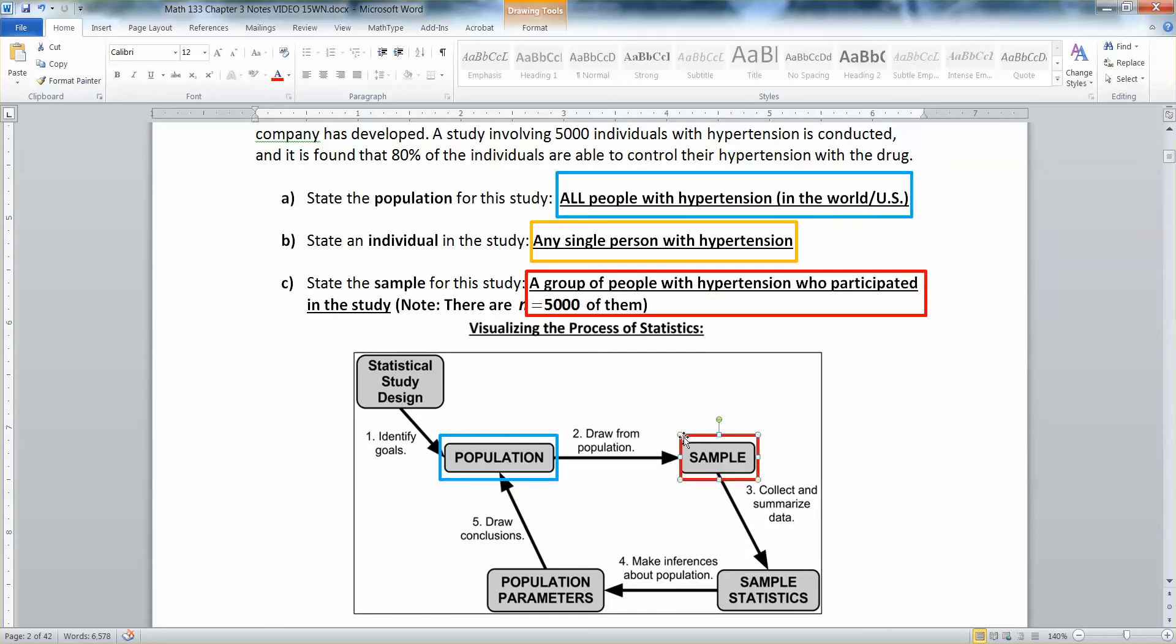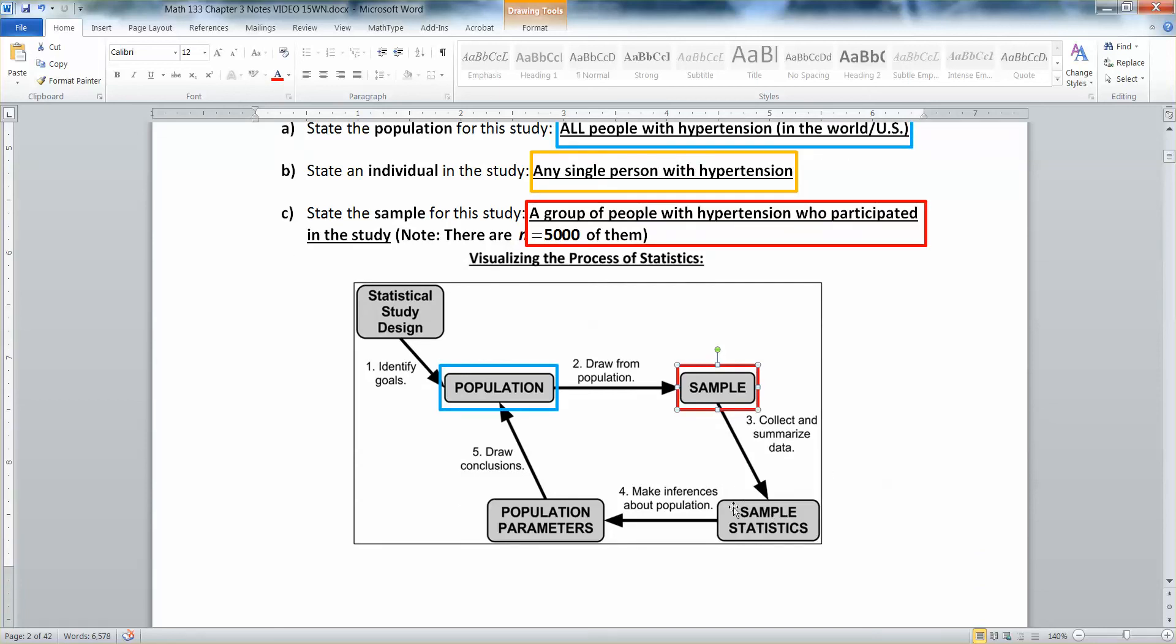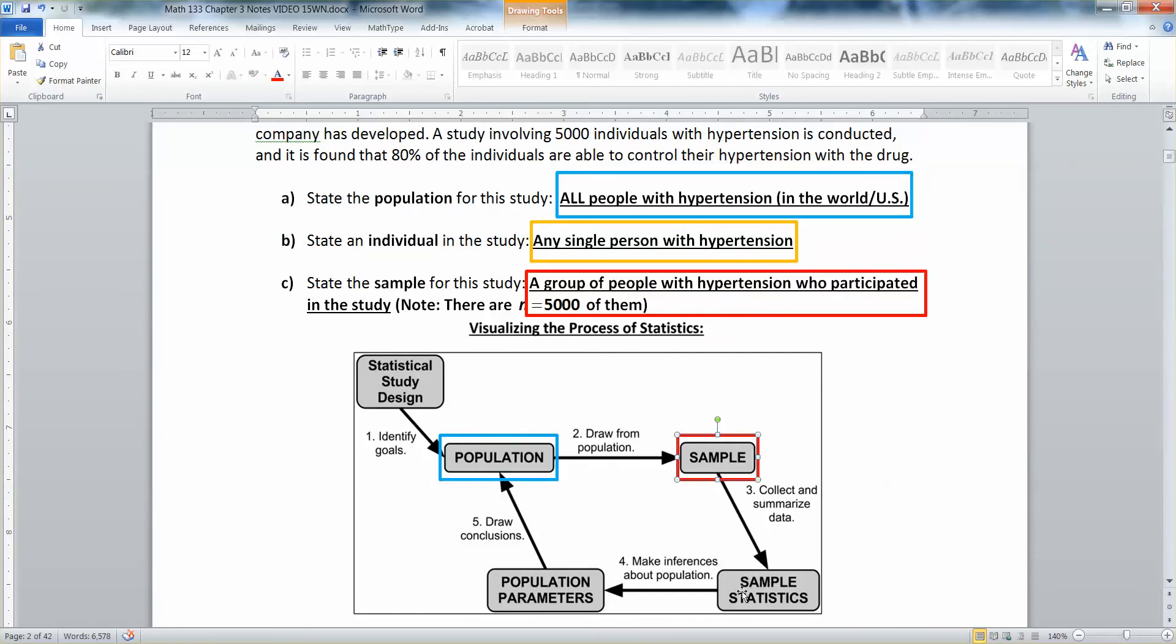Then from there we draw a sample. Now, if we're doing a good job of this, it'll be a nice random unbiased sample where everybody and every type of person is equally likely to be represented. So we pull that sample, nice, good sample. Then we collect and summarize data about that sample. So we give them the drug and see, are they able to control their hypertension or not? And from there we get the sample statistics. That's the 80% part. So we figure, 80% of this sample was able to control their hypertension. So that's the 80% comes from that sample.